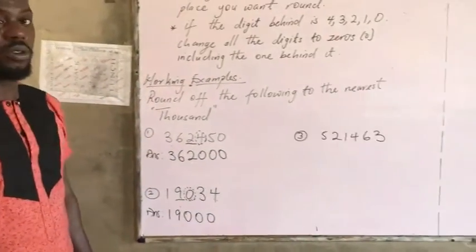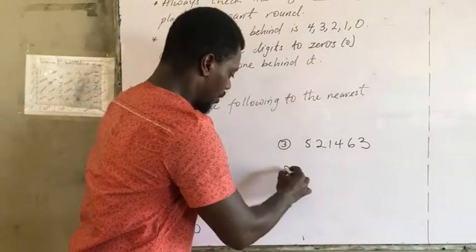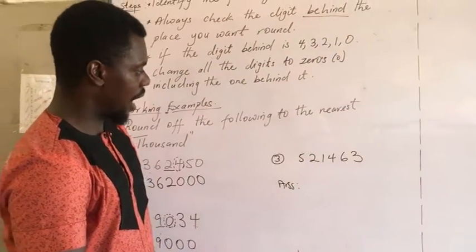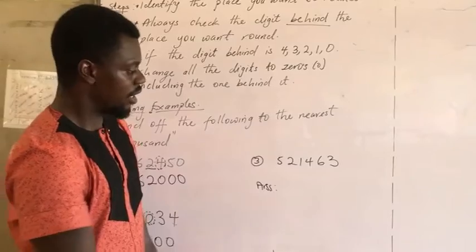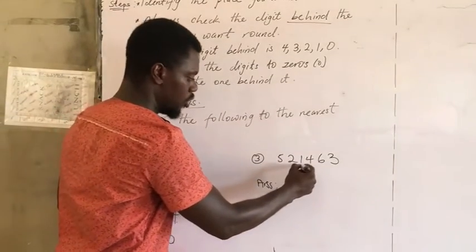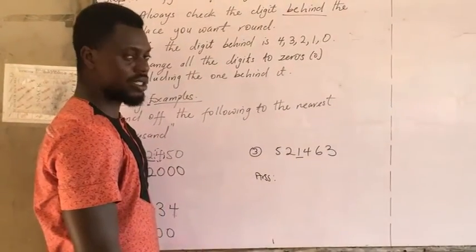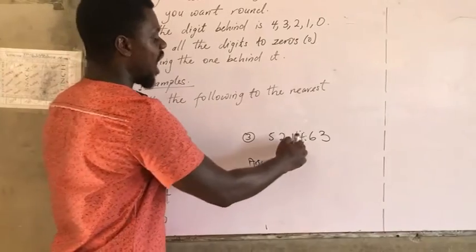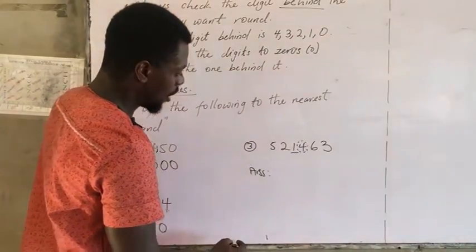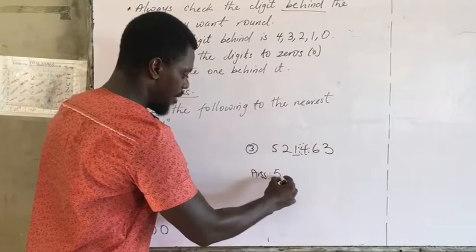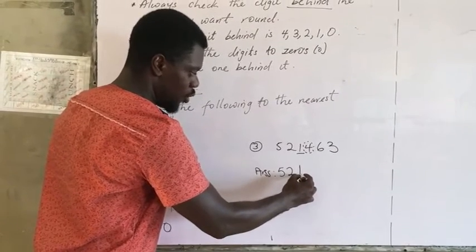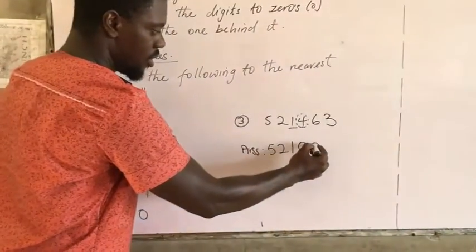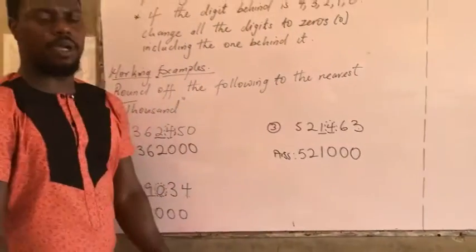Let's look at our last example for today. The digit at the thousands place is one. Check the digit behind it — it is four. Since four is in the zero-to-four category, we change everything behind the one to zero. So we write the one, and the four changes to zero, the six changes to zero, and the three changes to zero. I hope it is clear.